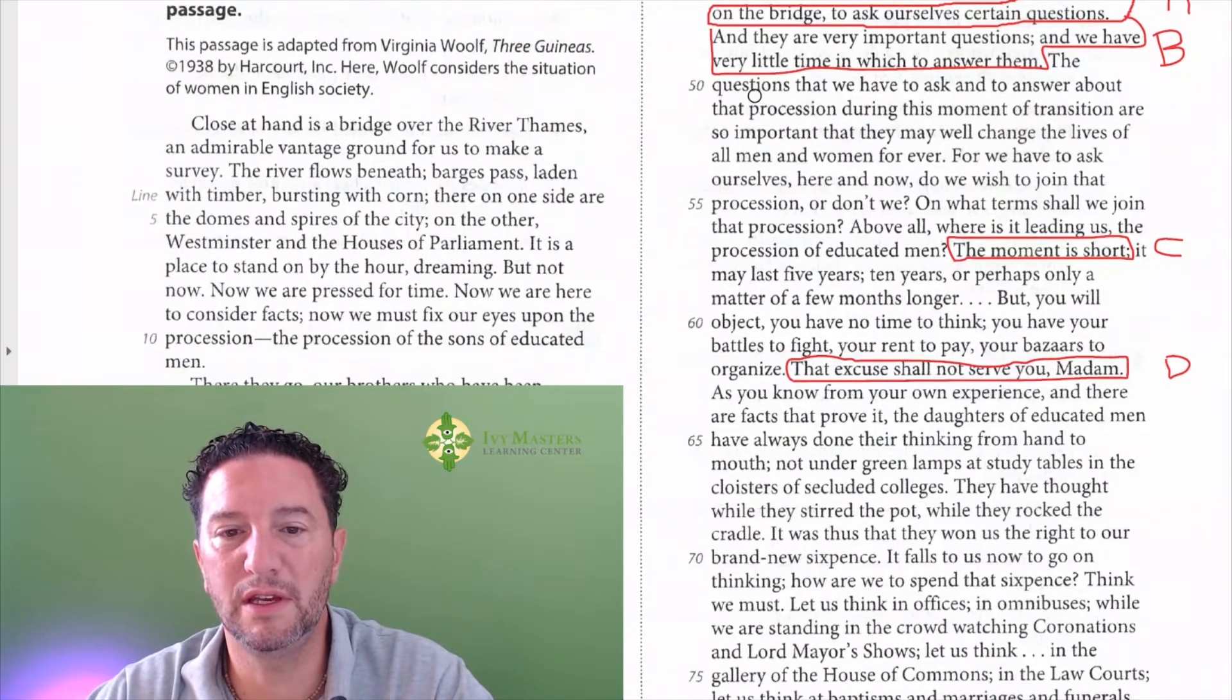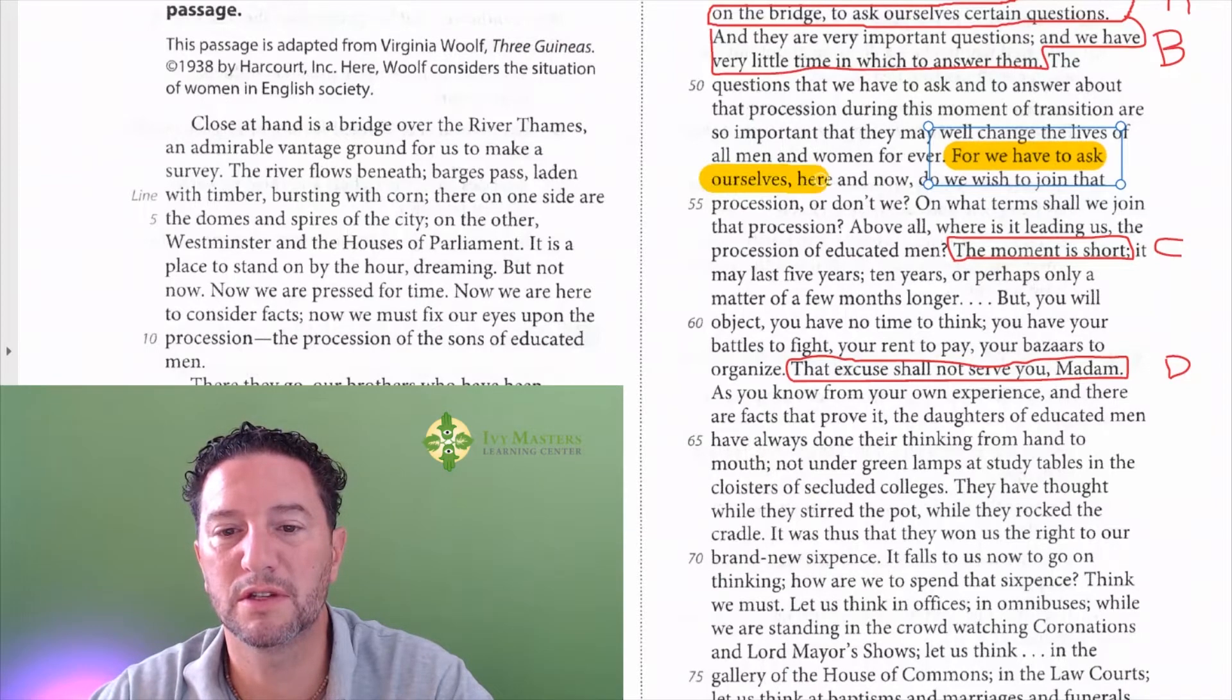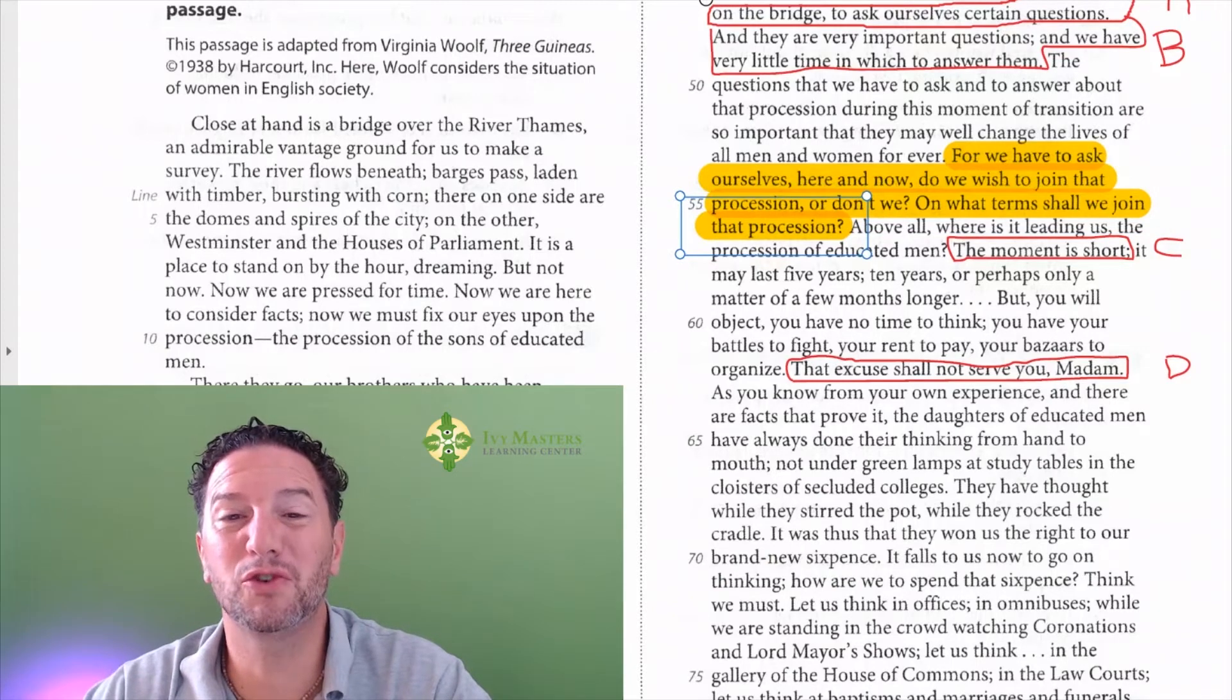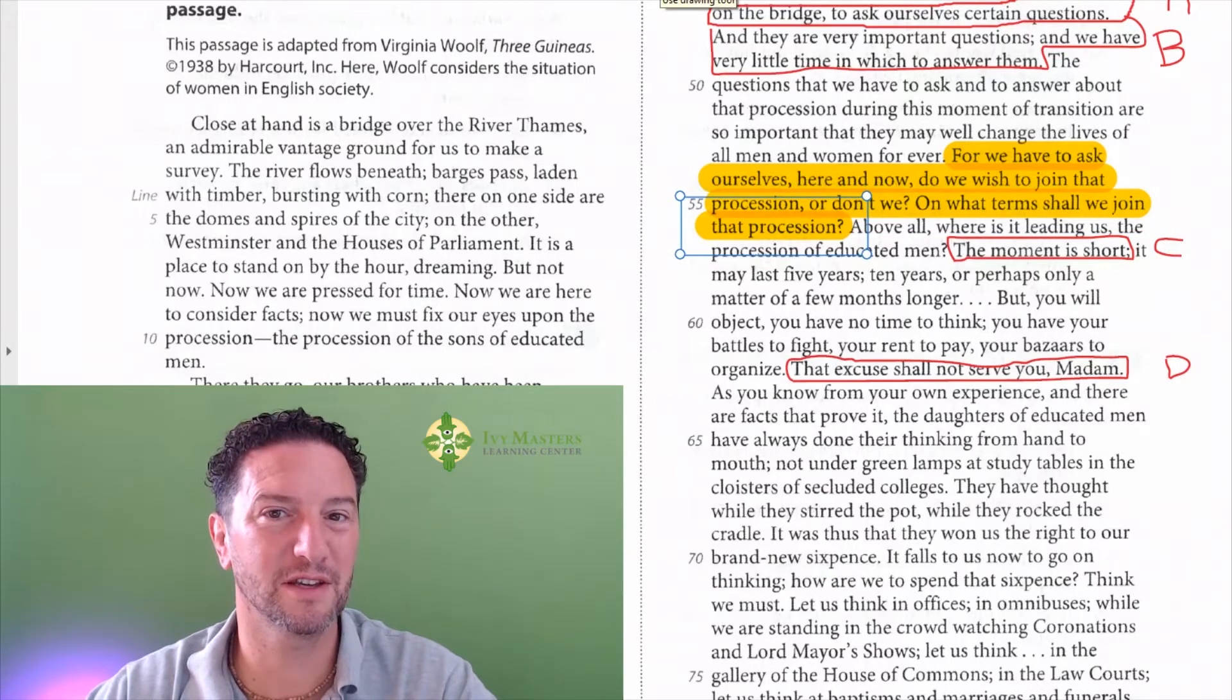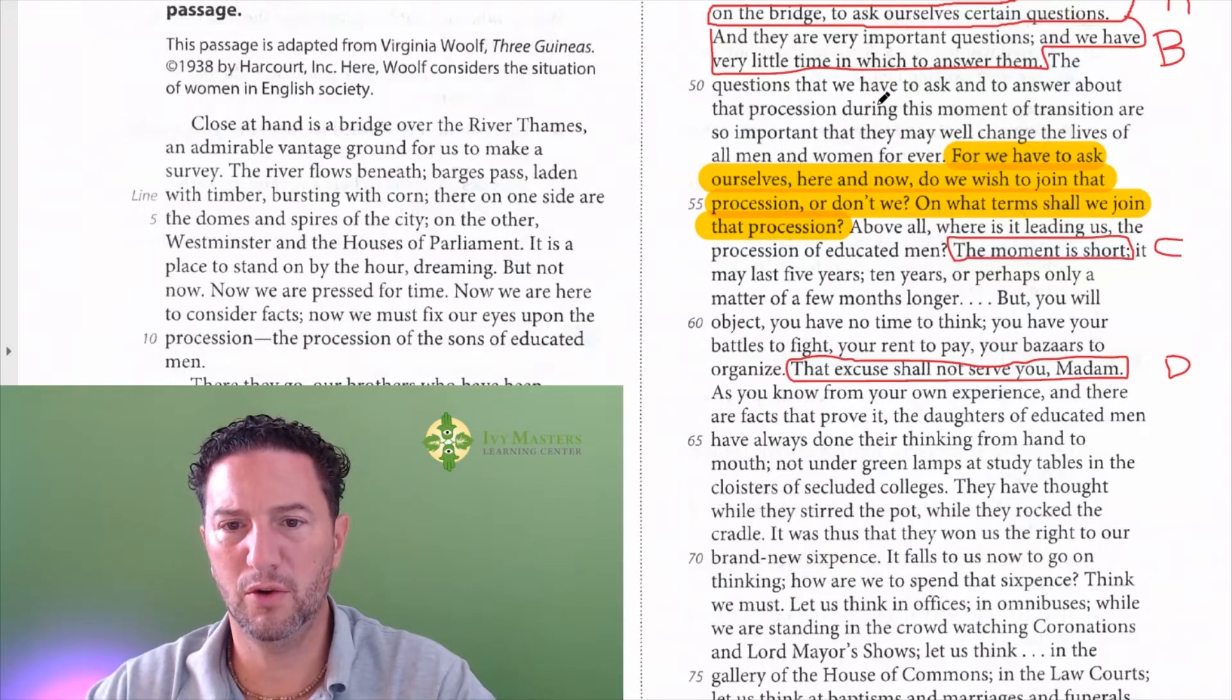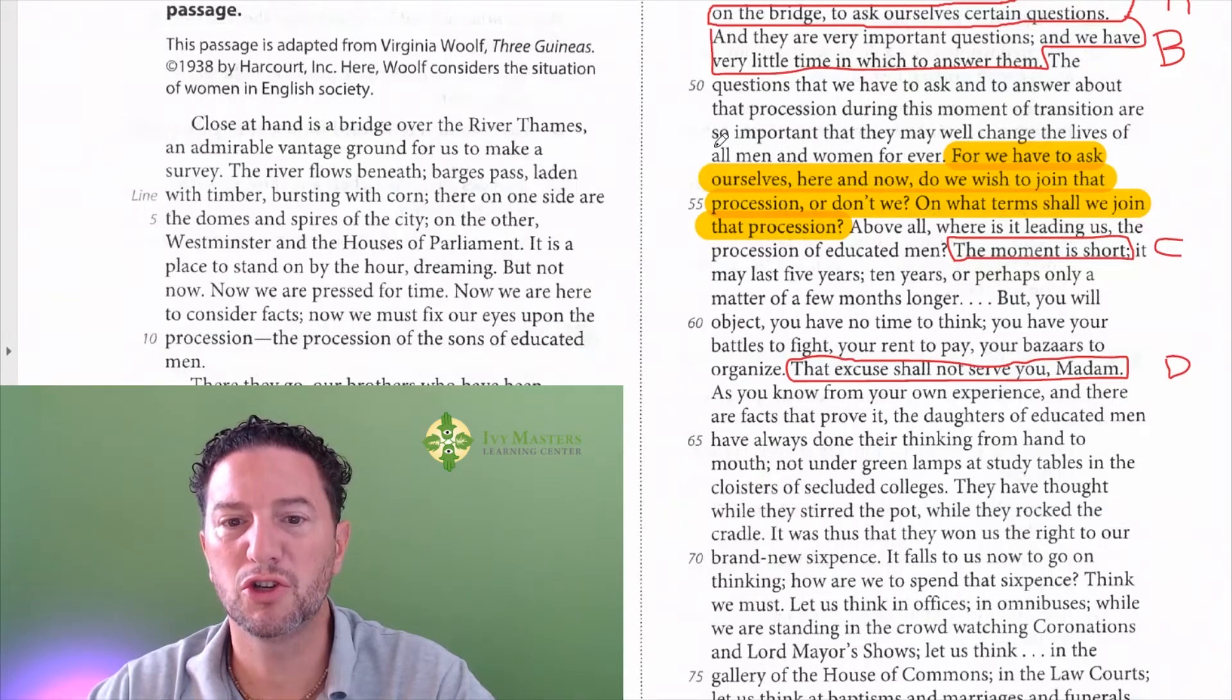53 is right here. We wish to join that procession or don't we? On what terms shall we join that procession? Now, even if you just read immediately before, this is outside the scope of the questions. What we get is over here, the questions we ask ourselves that answer in that procession during this moment of transition are so important.